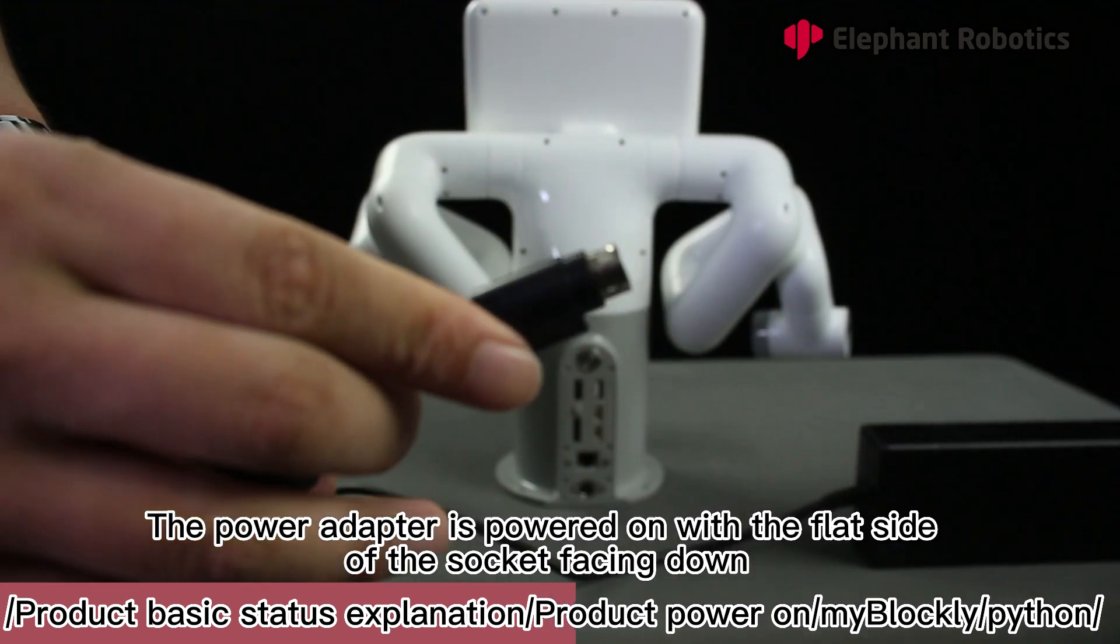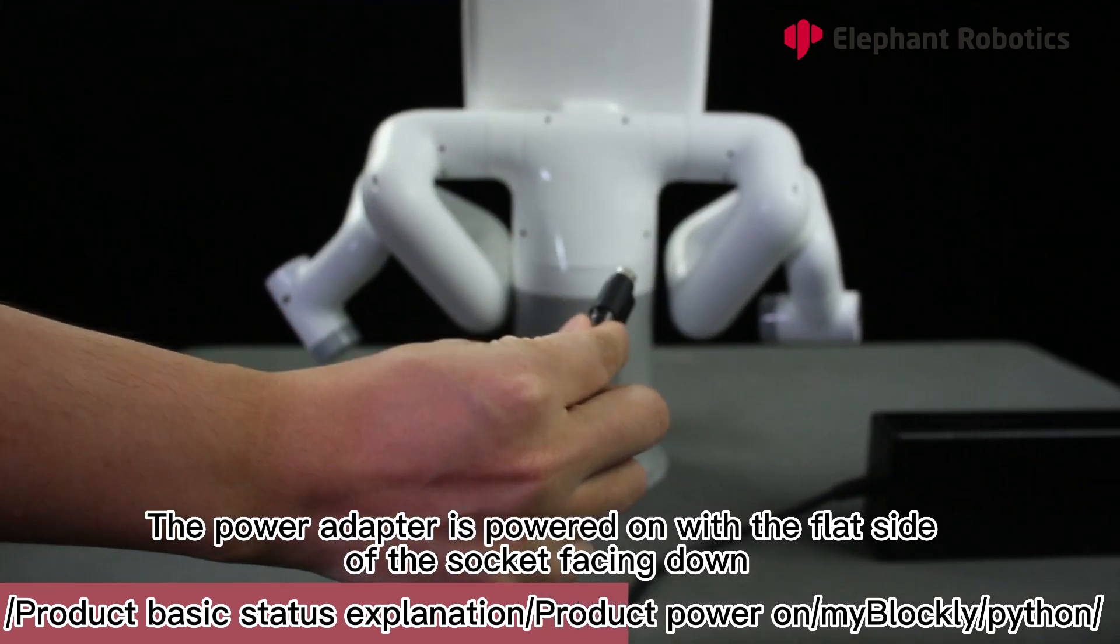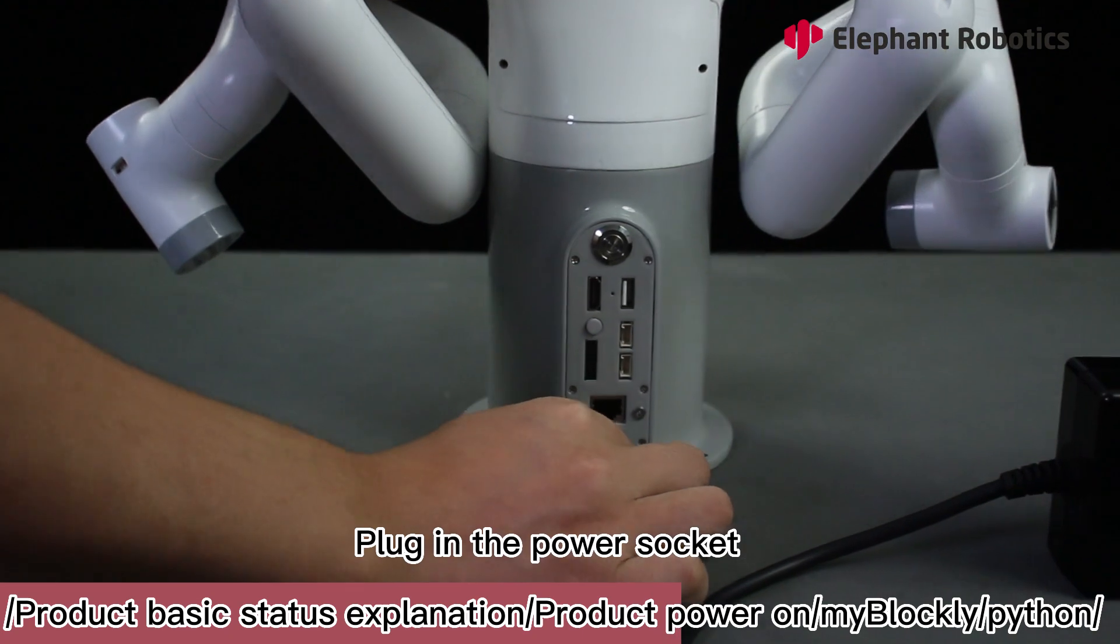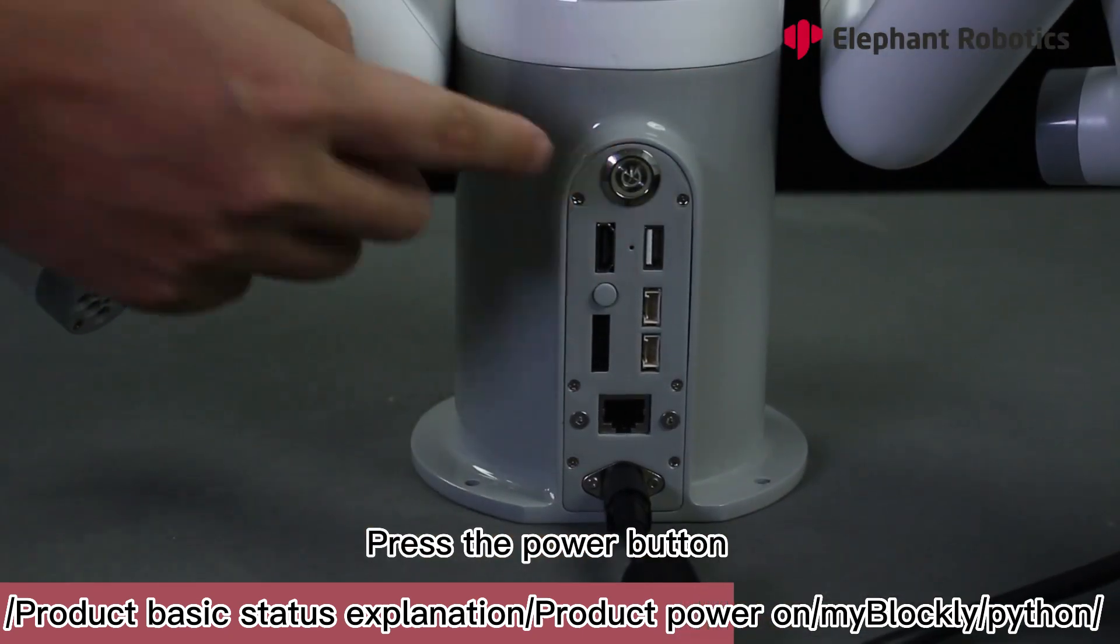The power adapter is powered on with the flat side of the socket facing down. Plug in the power socket. Press the power button. Booting.